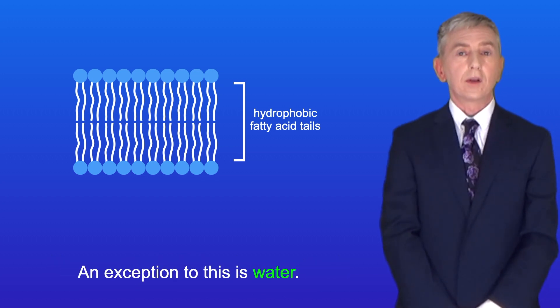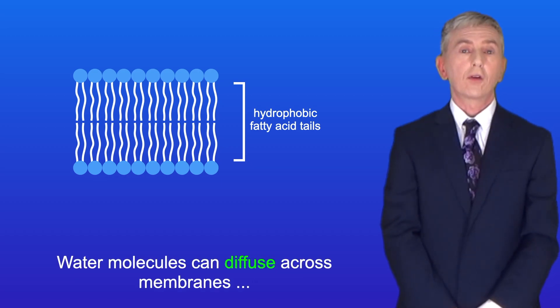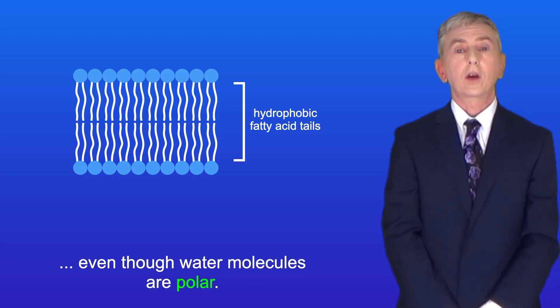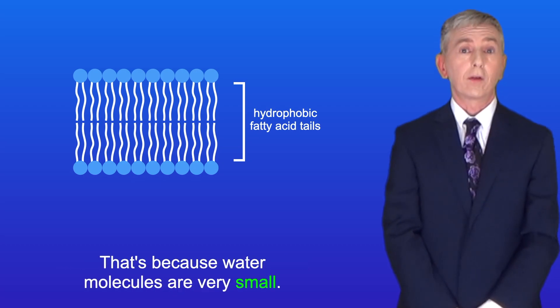Now an exception to this is water. Water molecules can diffuse across membranes, even though water molecules are polar. And that's because water molecules are very small.